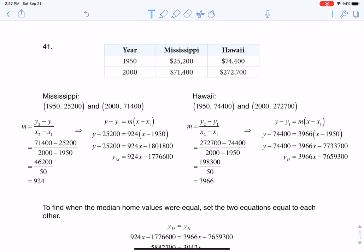Hey, Math 31. We had a question on number 41, and it said, if we assume the linear trend existed before 1950 and continues after 2000, the two states' median house values will be or were equal in what year? And it even gives you a hint that the answer might be absurd. So let's unpack this.